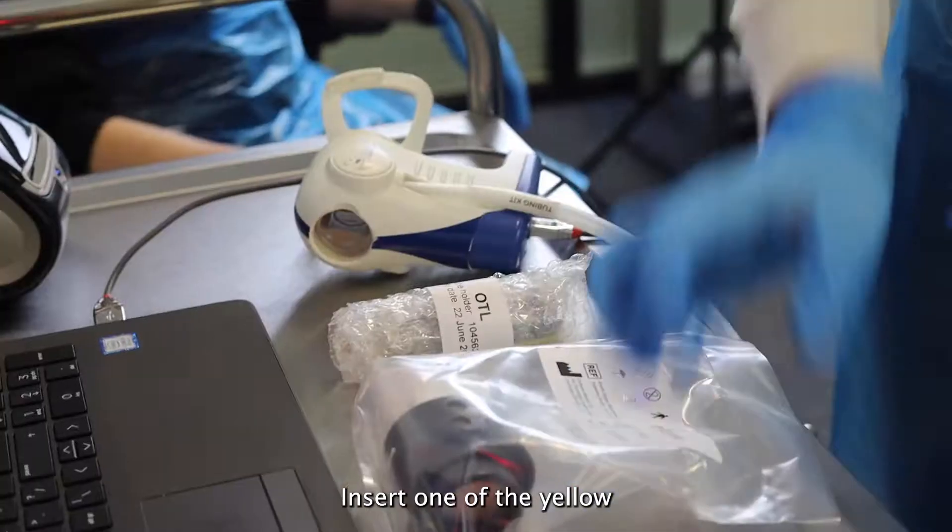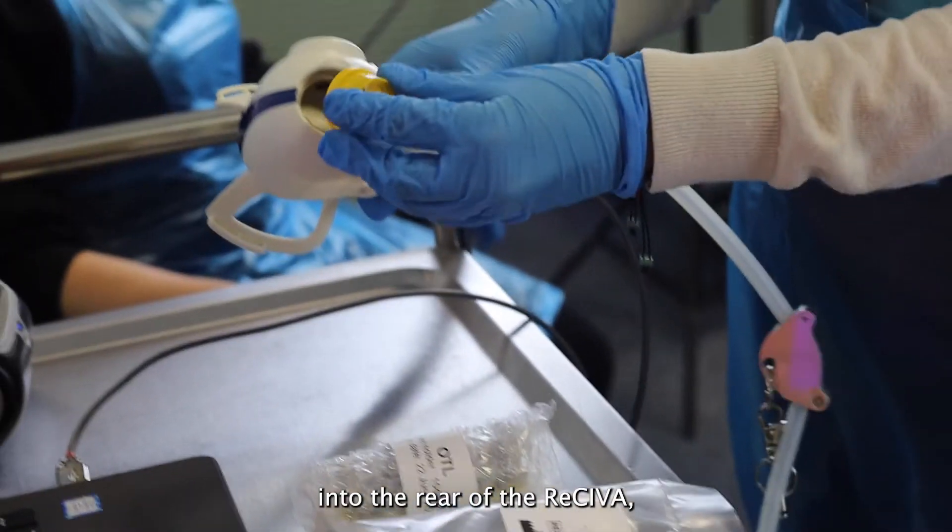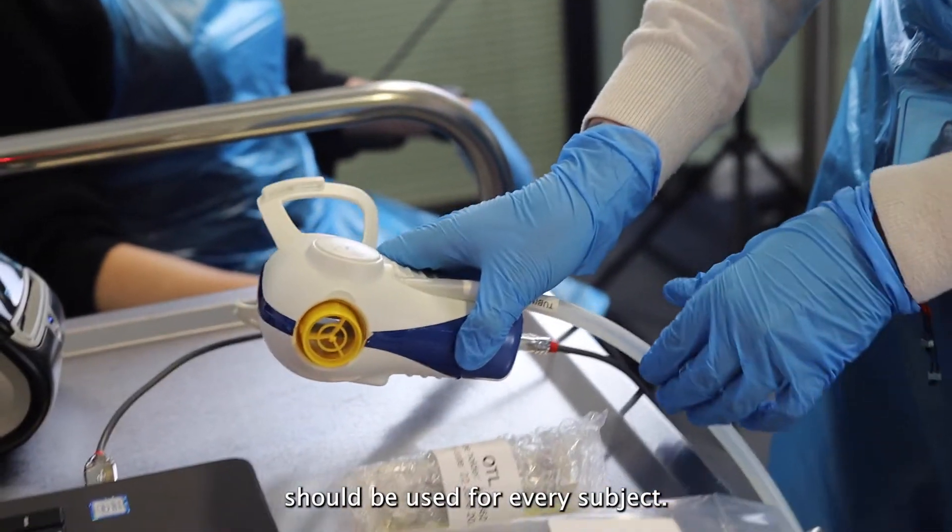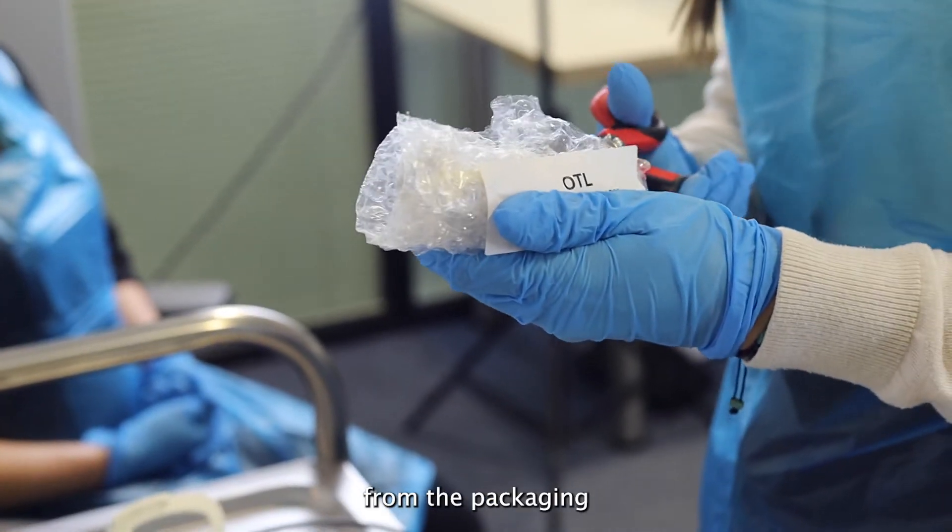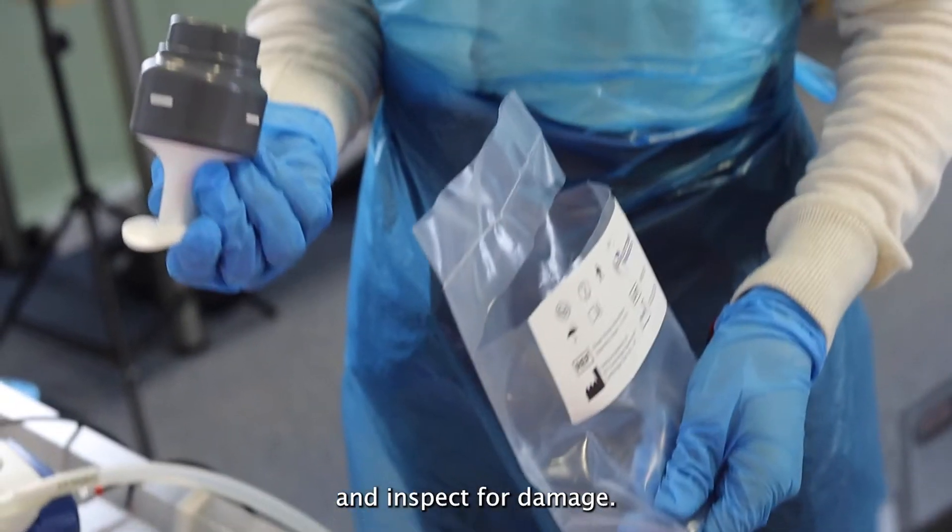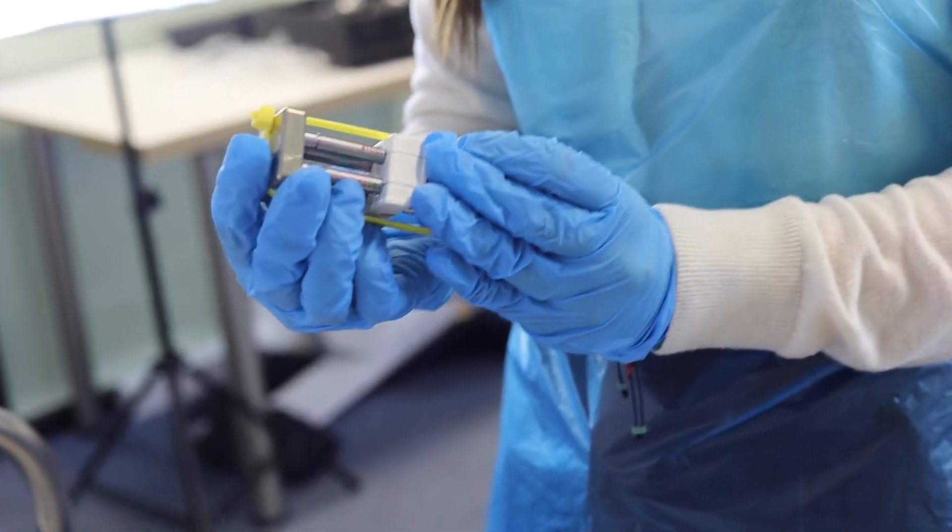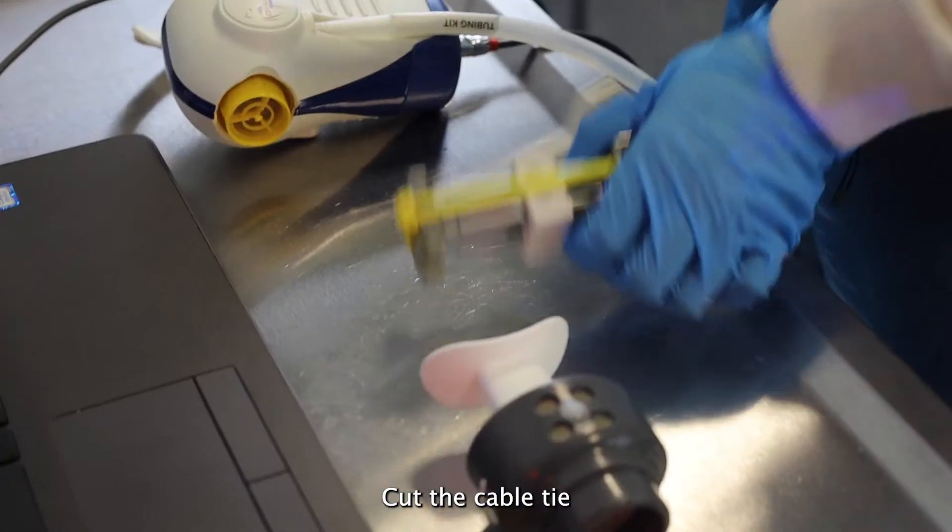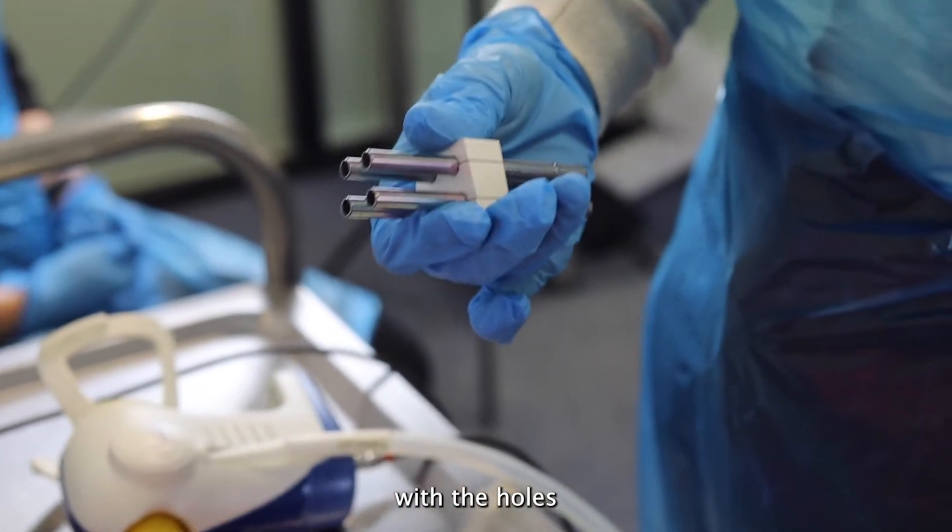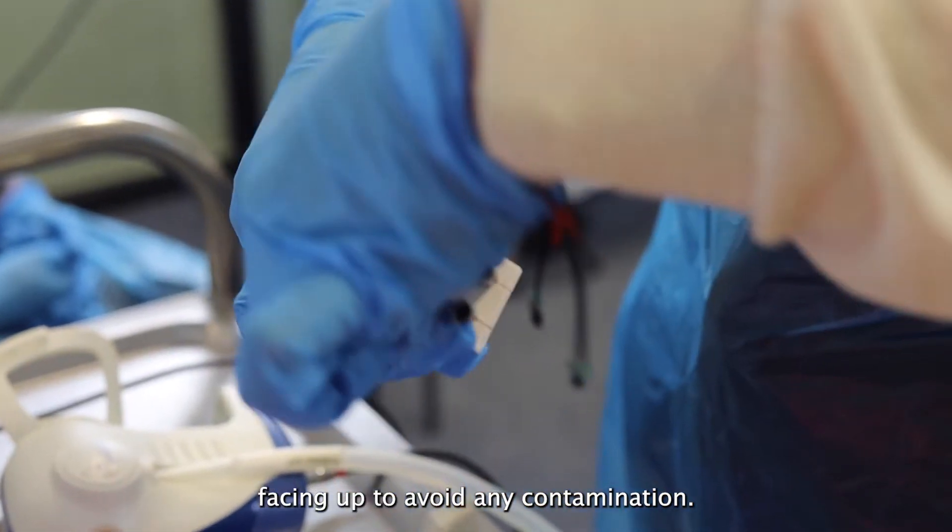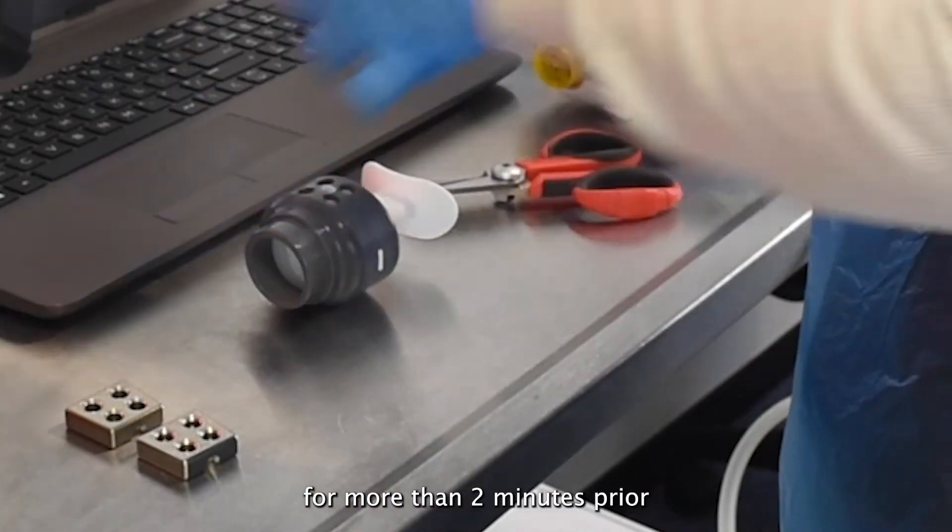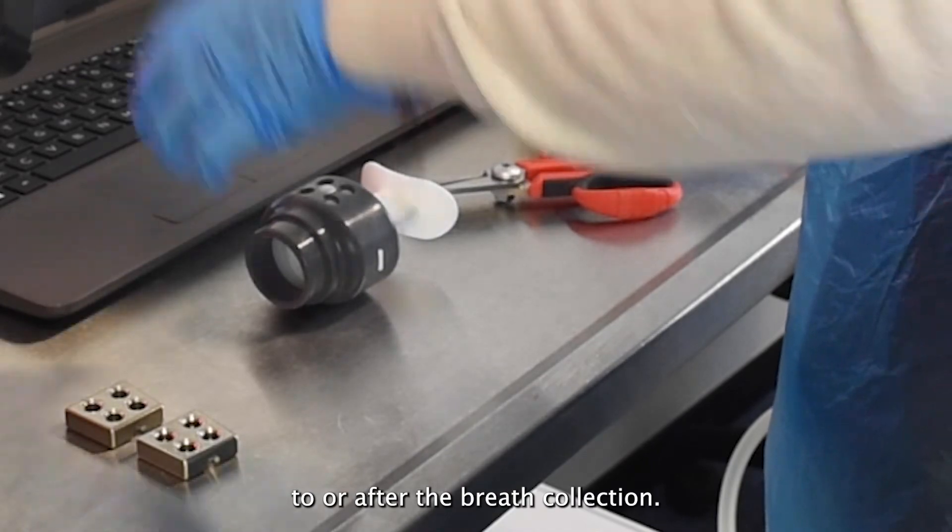Insert one of the yellow non-return valves into the rear of the receiver. A new non-return valve should be used for every subject. Remove the cartridge and mouthpiece from the packaging and inspect for damage. Cut the cable tie and pull the end caps off the cartridge and place on a clean surface with the holes facing up to avoid any contamination. Do not leave the cartridge uncapped for more than two minutes prior to or after the breath collection.